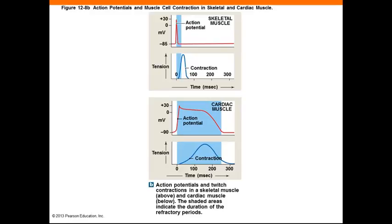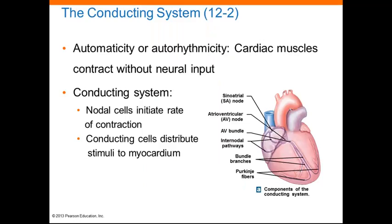A heart in tetanus can't pump blood, and that's the sole purpose of the heart. Unlike skeletal muscles, cardiac muscle tissue can contract independently of neural or hormonal stimulation. This is called automaticity or autorhythmicity.